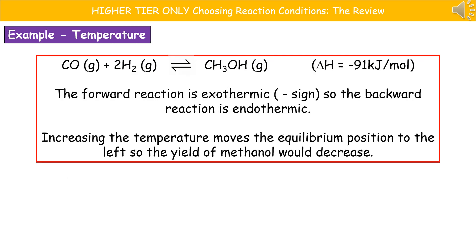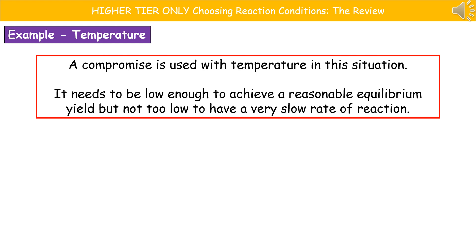If we consider temperature: our forward reaction is exothermic because our delta H is negative, which means the backwards reaction is endothermic. So if we increase the temperature it will move the equilibrium position to the left, which would decrease our yield of methanol. However, we're not just going to drop the temperature as low as we possibly can - we're again going to have a compromise. We need it to be low enough to achieve a reasonable equilibrium yield, but not too low so it's got a very slow rate of reaction. Wherever we're looking at choosing these reaction conditions, the key word is probably going to be compromise.